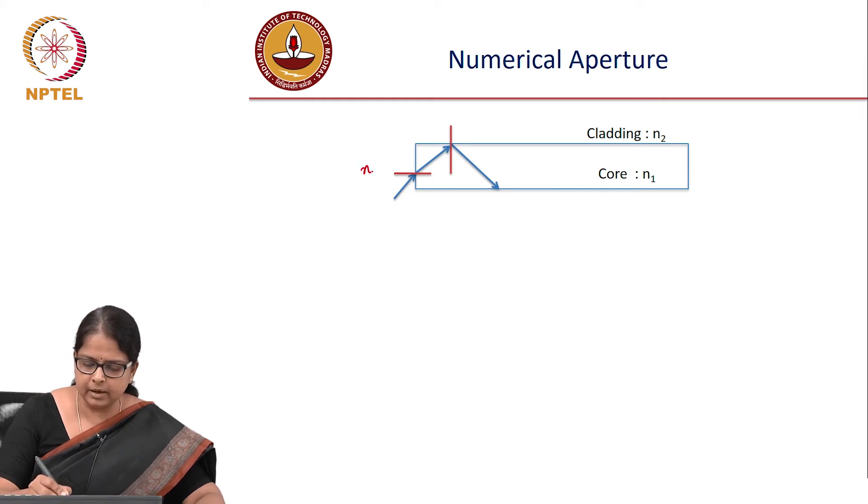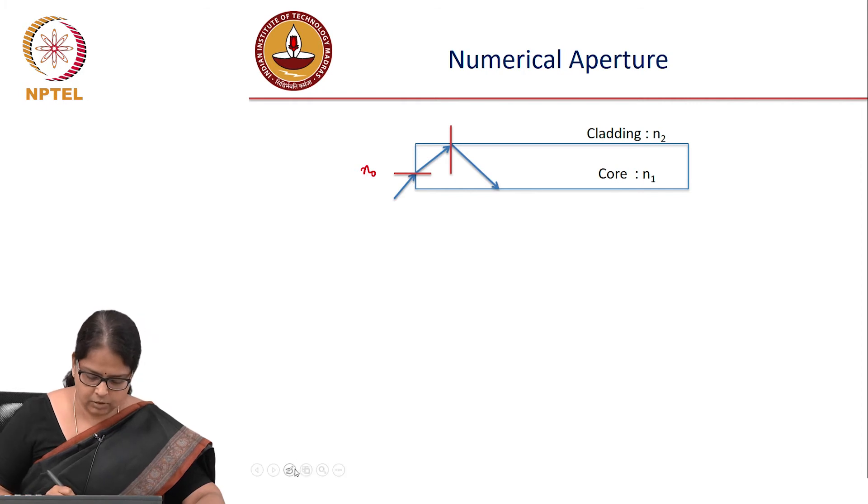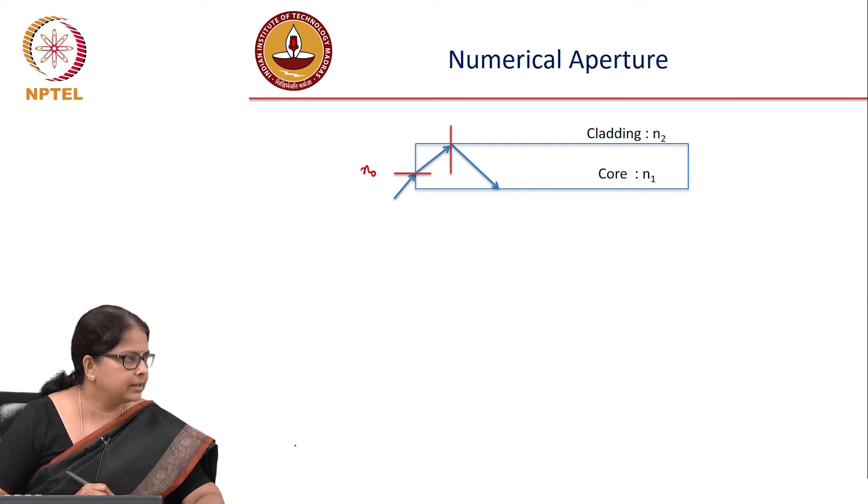Let's say the surrounding is air with refractive index n₀. We know the mechanism of total internal reflection, which helps light get trapped inside the fiber.